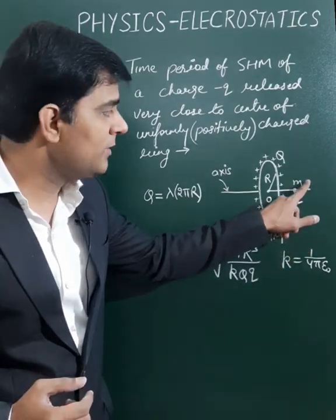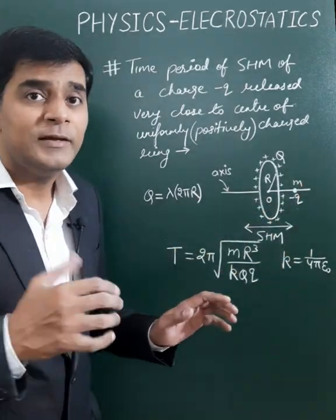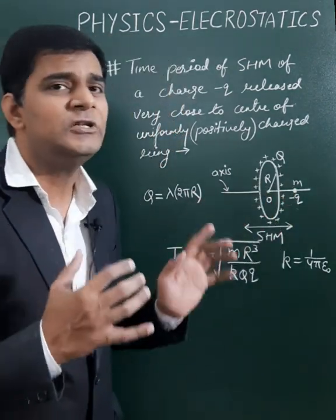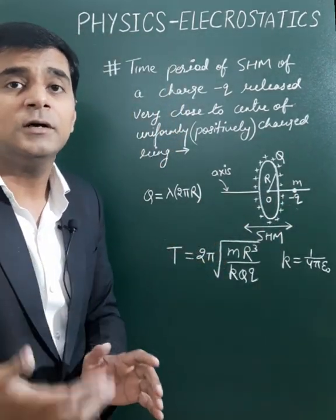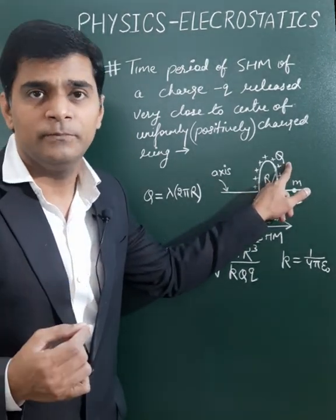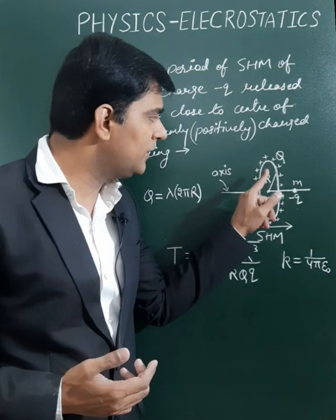When a particle of mass M and charge minus Q is released very close to the center of a uniformly charged ring, where the charge on the ring is positive and suppose it is capital Q, the radius of the ring is capital R.